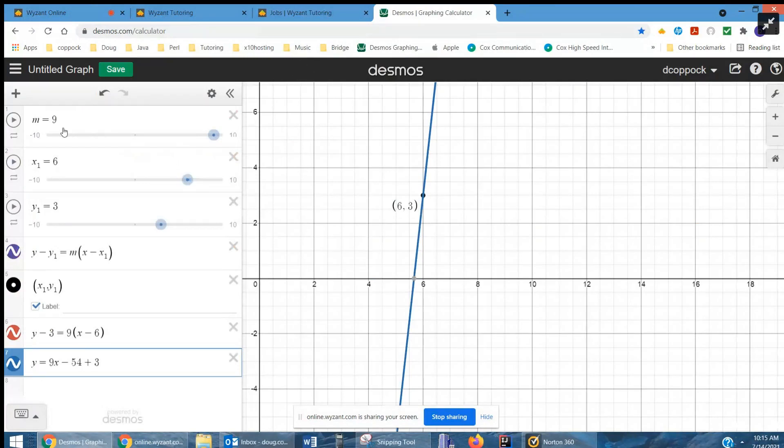You can do this in general using variables. Let's let m, the slope, equal 9, x sub 1 be the x-coordinate of the point that the line passes through, and y sub 1 is equal to 3, the y-coordinate of the point that the line passes through.